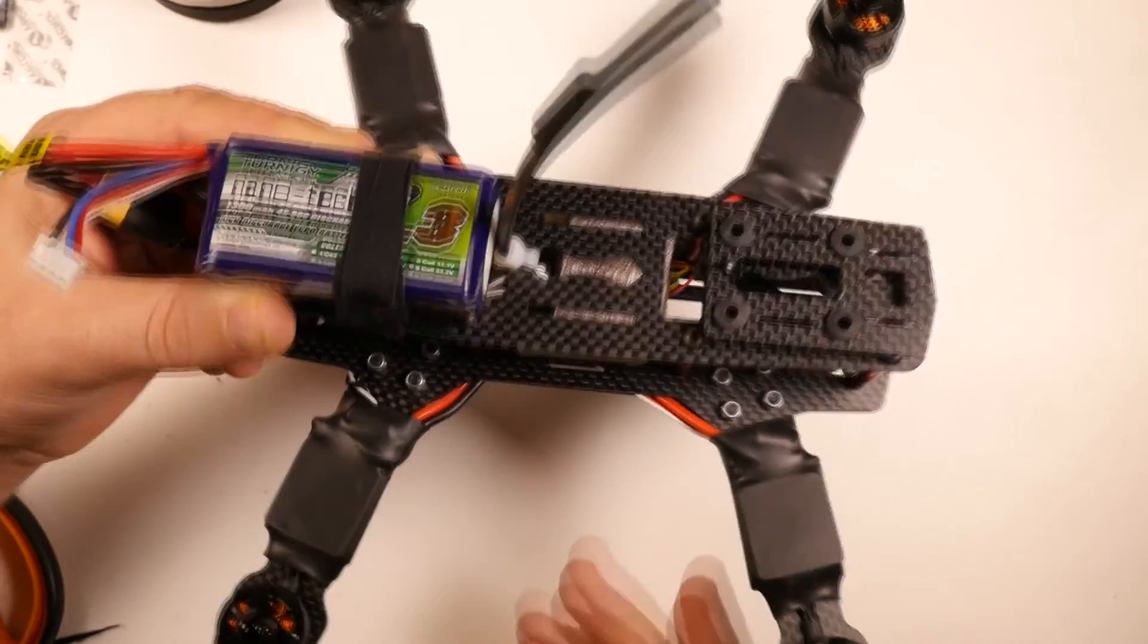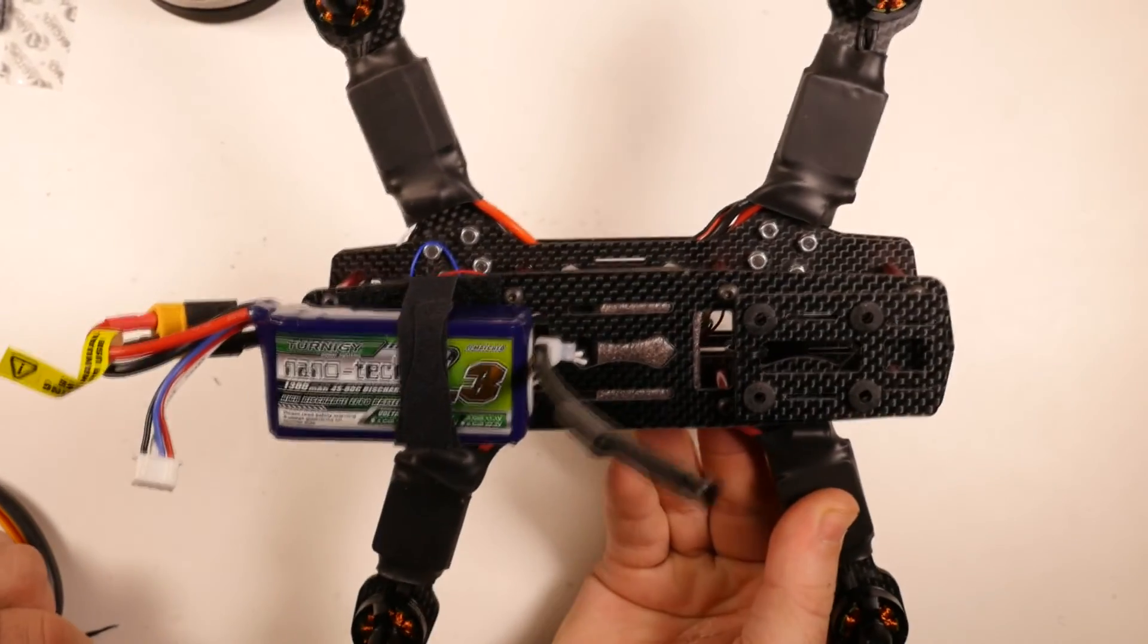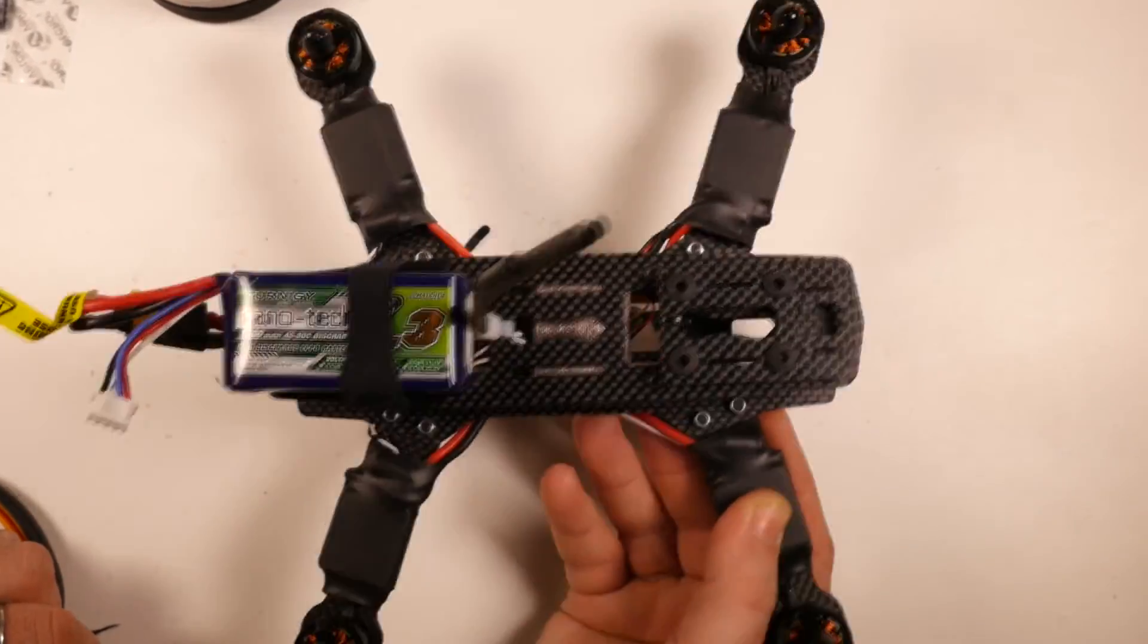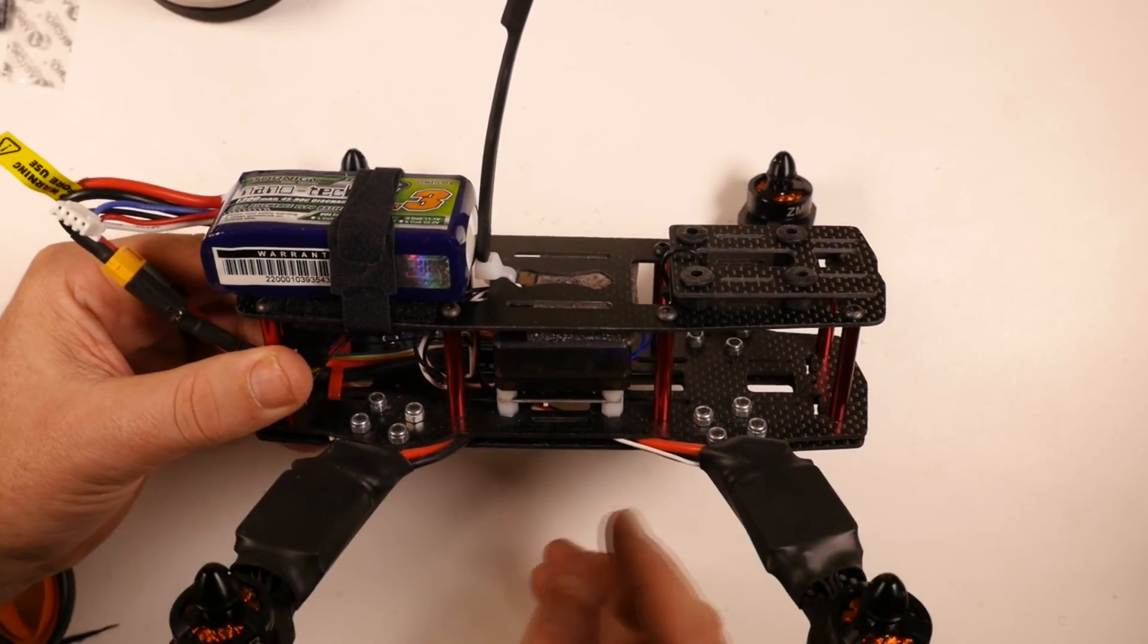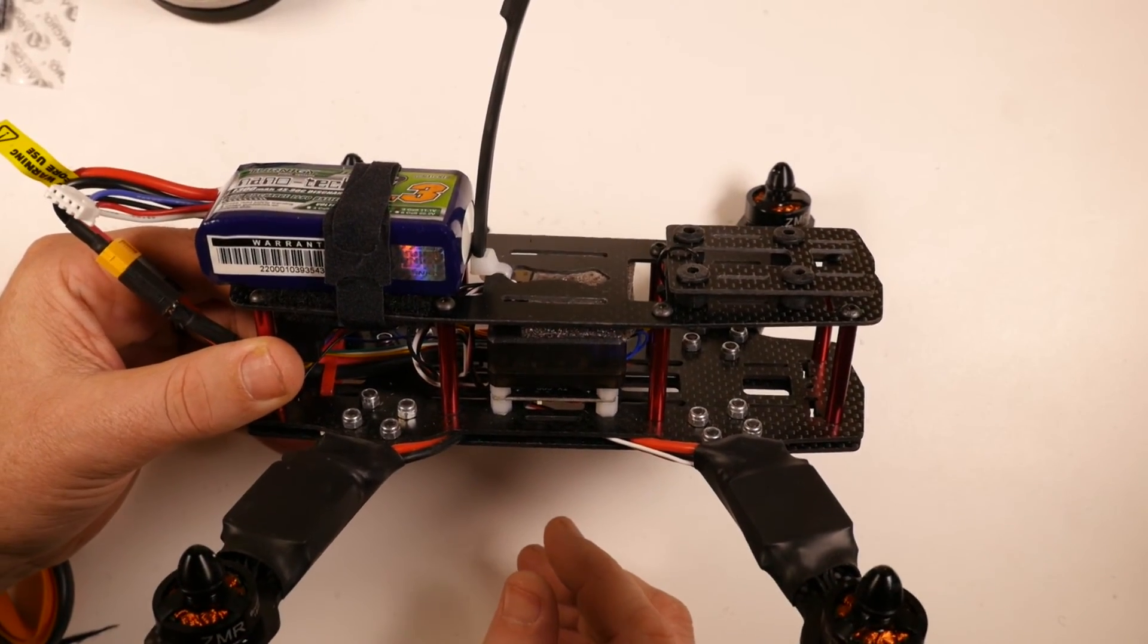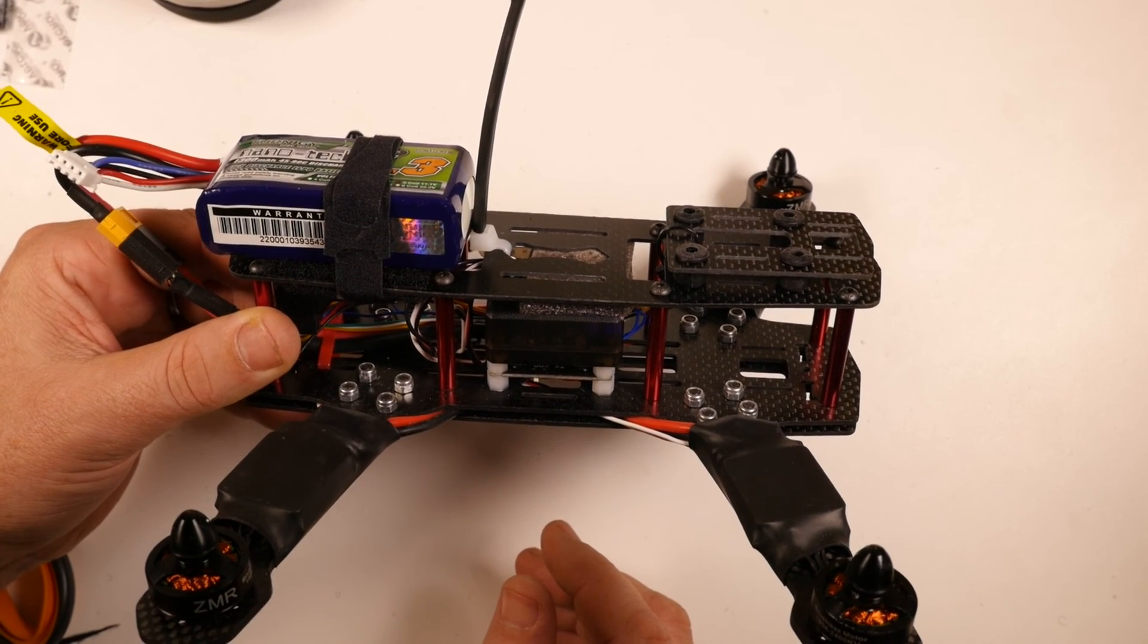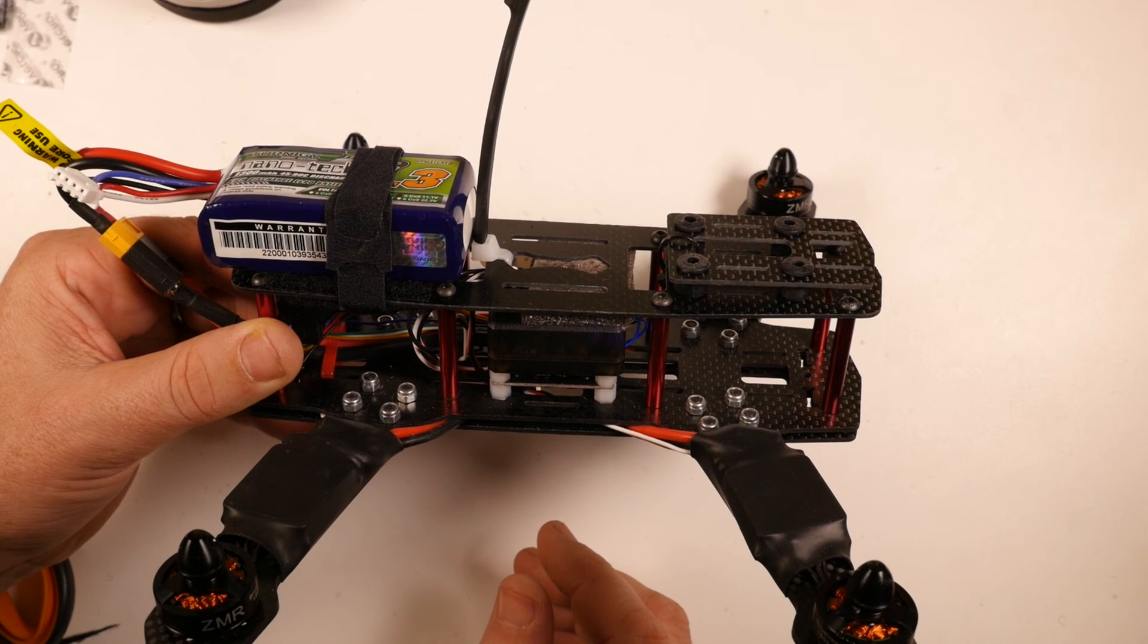And now this is our mini quad with everything except the props installed, almost ready to go. And I say almost because the last step that we have to do is quickly just do our sticks calibration on our transmitter. And to do that we need to go back over and plug the flight controller into CleanFlight.